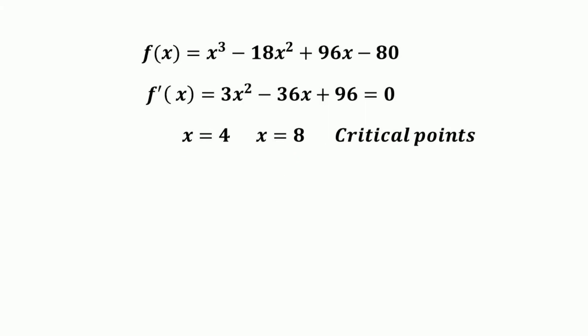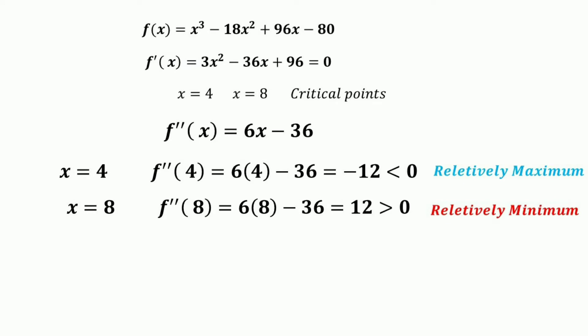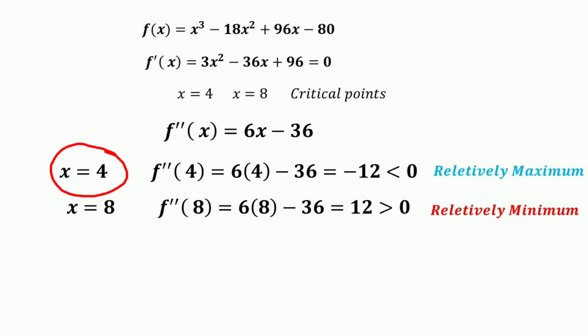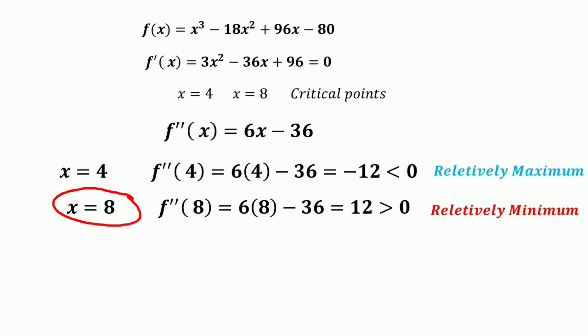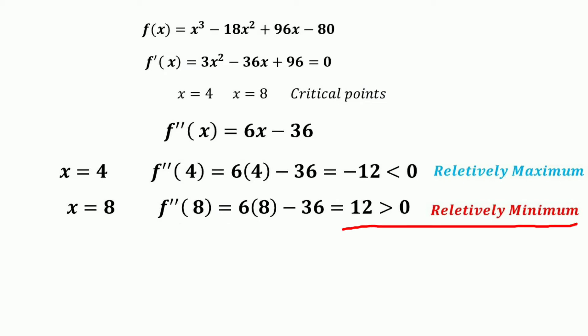Once we find the critical points, the second order condition requires finding the second derivative: f''(x) = 6x - 36. Substituting x = 4: f''(4) = 6(4) - 36 = -12, which is less than 0, so the function is relatively maximum at x = 4. Substituting x = 8: f''(8) = 6(8) - 36 = 12, which is greater than 0, so the function is relatively minimum at x = 8.